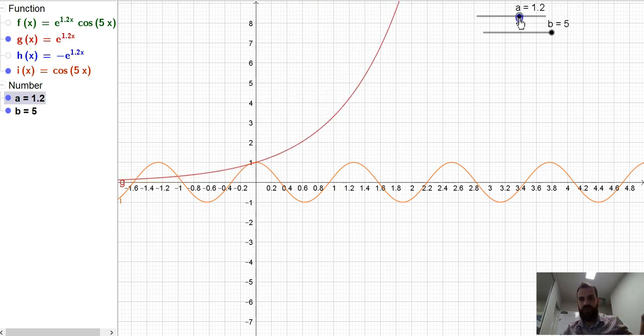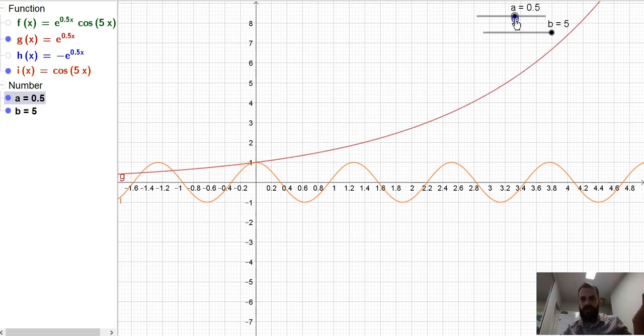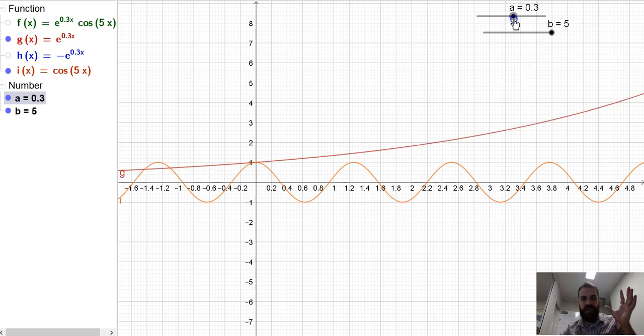And if I make it less than 1, so 0.9, you can see we're getting down and down. It's getting flatter. And then when it becomes negative,